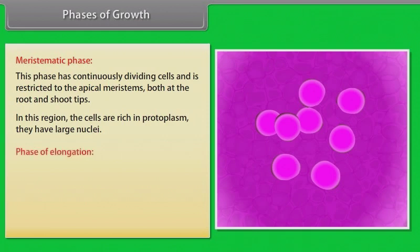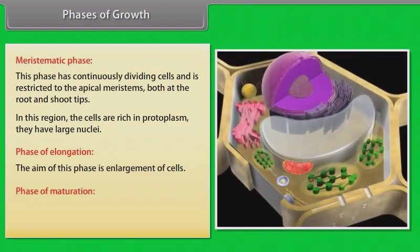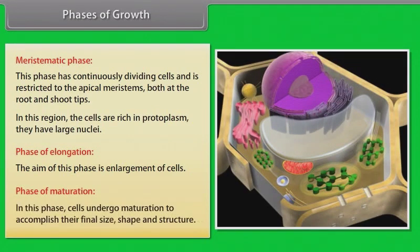Phase of elongation - the aim of this phase is enlargement of cells. Phase of maturation - in this phase, cells undergo maturation to accomplish their final size, shape, and structure.